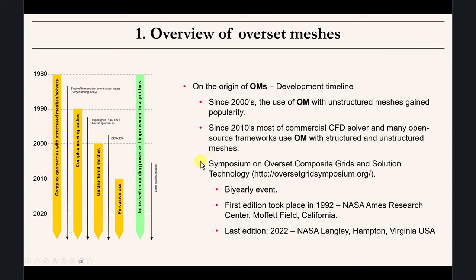There is the Overset Composite Grids Symposium — this method has many names: I call it overset meshes, some people call it chimera meshes, and the more technical term is overset composite grids. The first edition of that symposium was in 1992 and the last one was in 2022. I strongly recommend you look at those resources — there is a lot of information there.